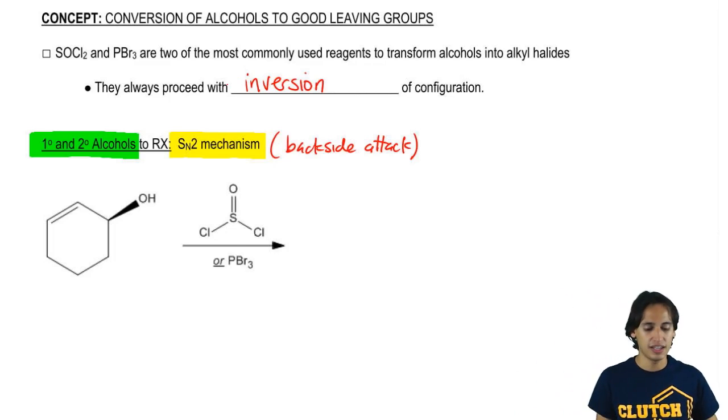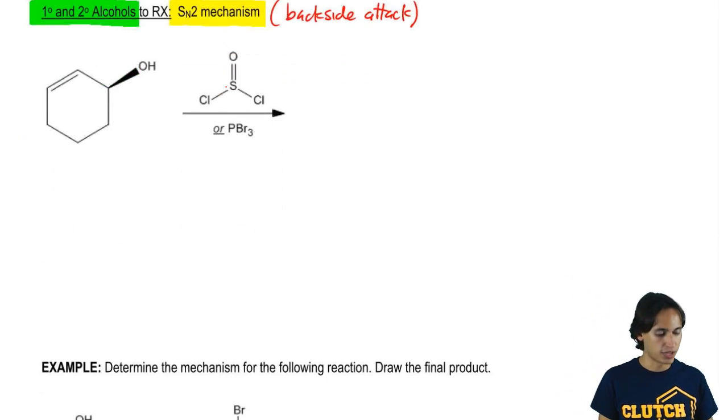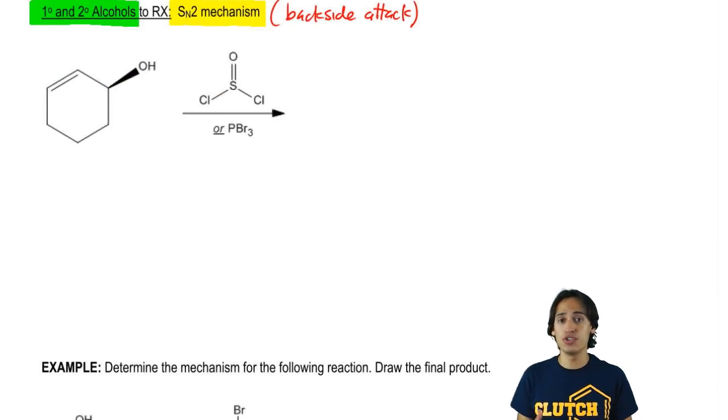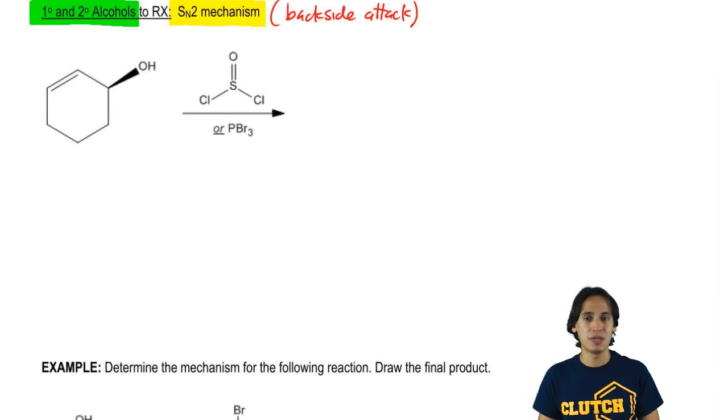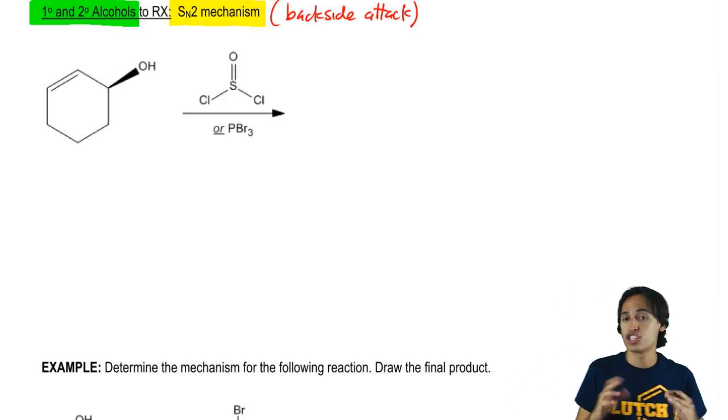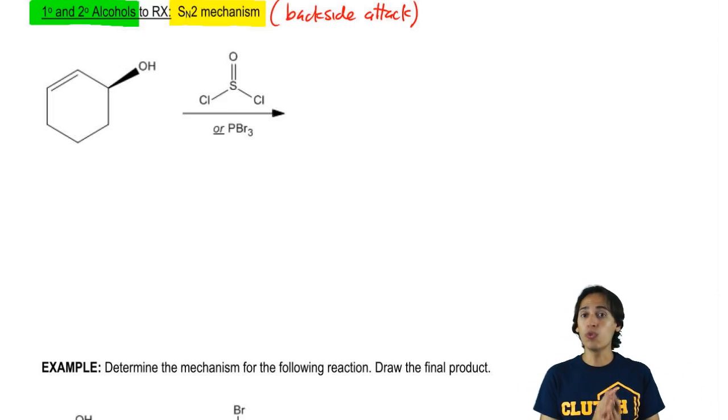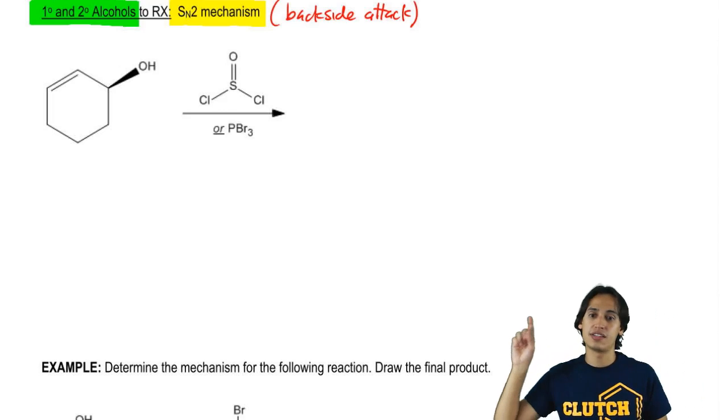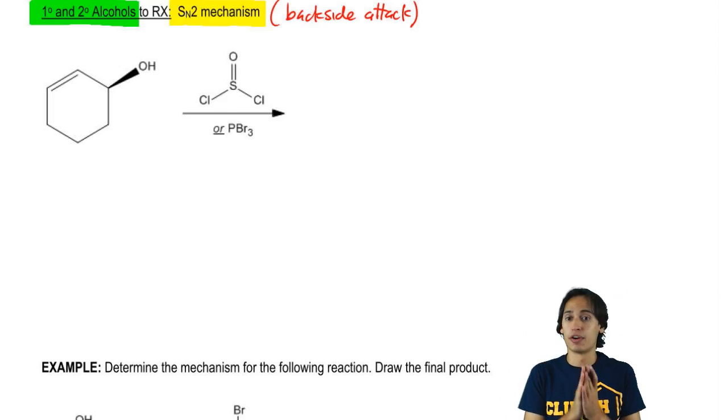So let's go ahead and analyze this mechanism. I'm going to show you the general mechanism for SOCl2, but the same thing applies to PBr3. In fact, I'm going to have you guys figure out the mechanism for PBr3 all on your own. Let's go ahead and check out SOCl2. Overall, the structure of SOCl2 or thionyl chloride is an S, a double bond O, and then two chlorines coming off the ends.